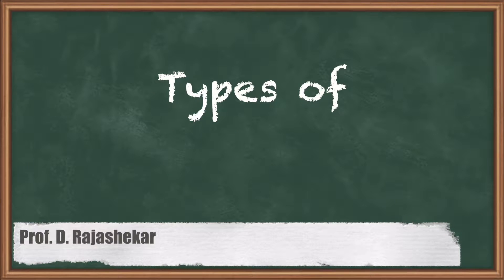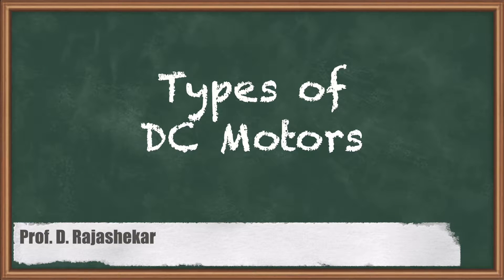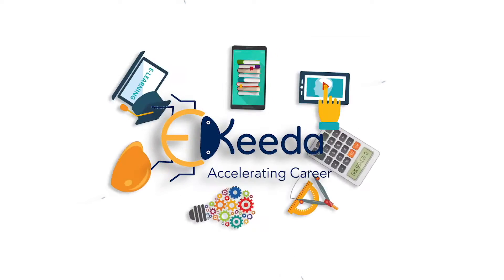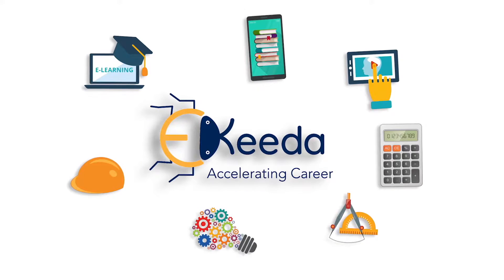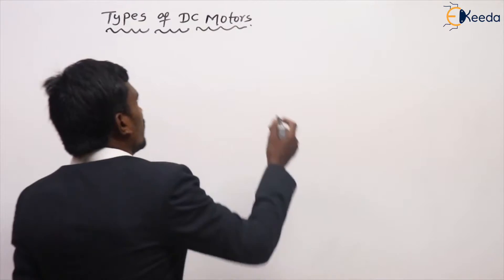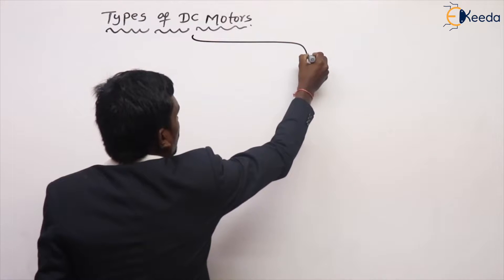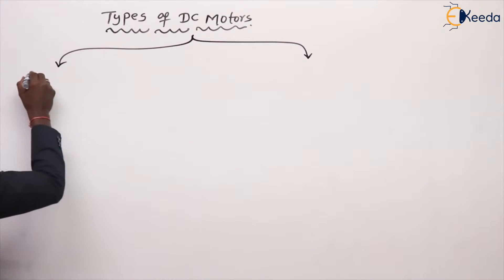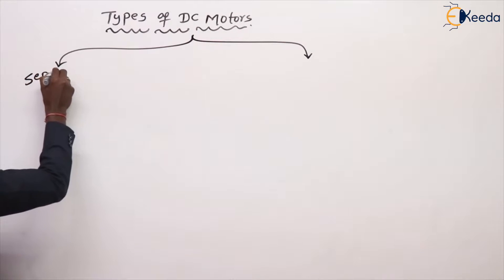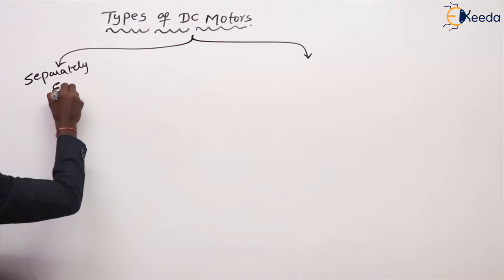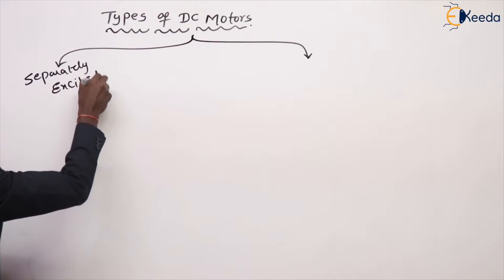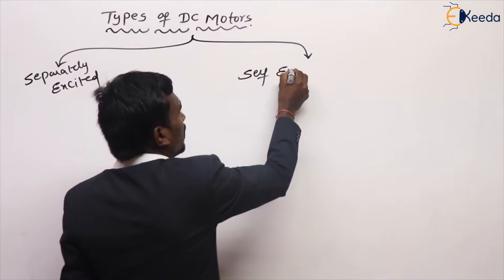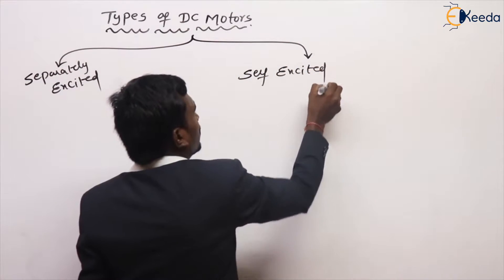Hi friends, in this video we are going to discuss about types of DC motors. Generally, DC motors are two types: one is the separately excited DC motor, and the next one is the self-excited DC motors.